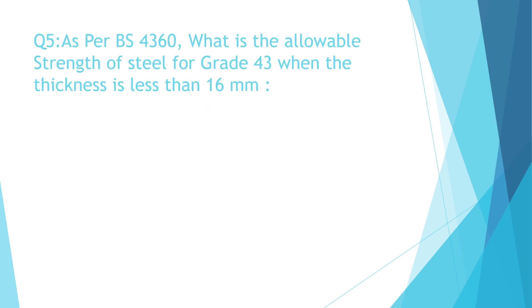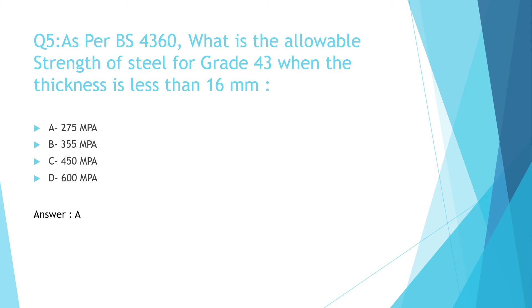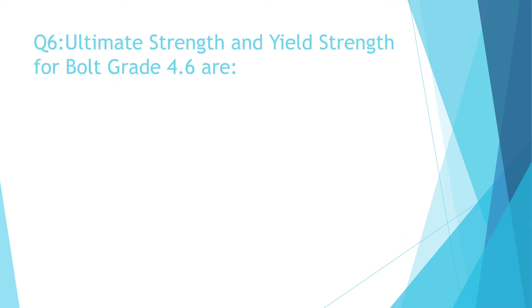Question 5: As per BS 4360, what is the allowable strength of steel for Grade 43 when the thickness is less than 16 millimeter? Options: a) 275 MPa, b) 355 MPa, c) 450 MPa, d) 600 MPa. The correct answer is a) 275 MPa.